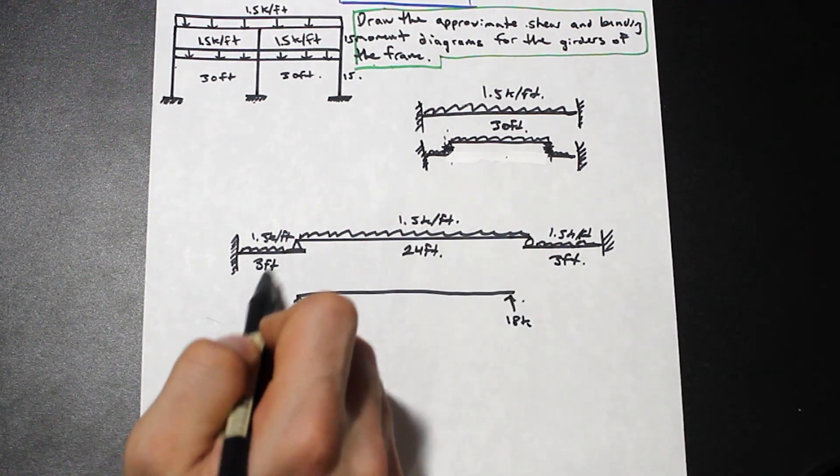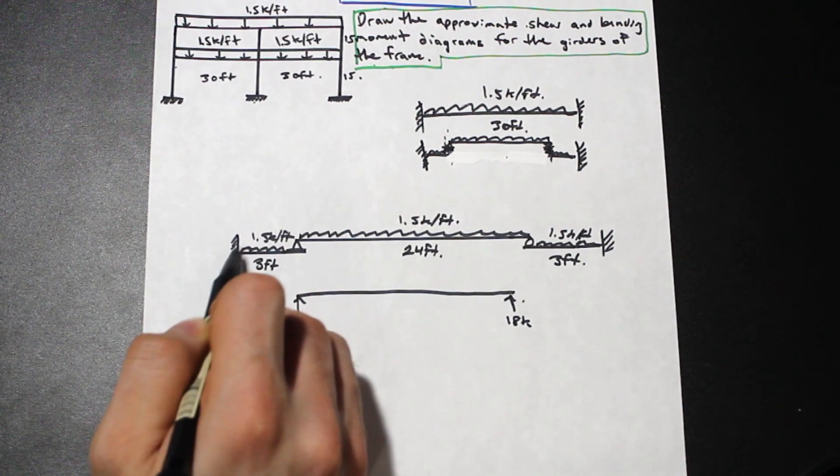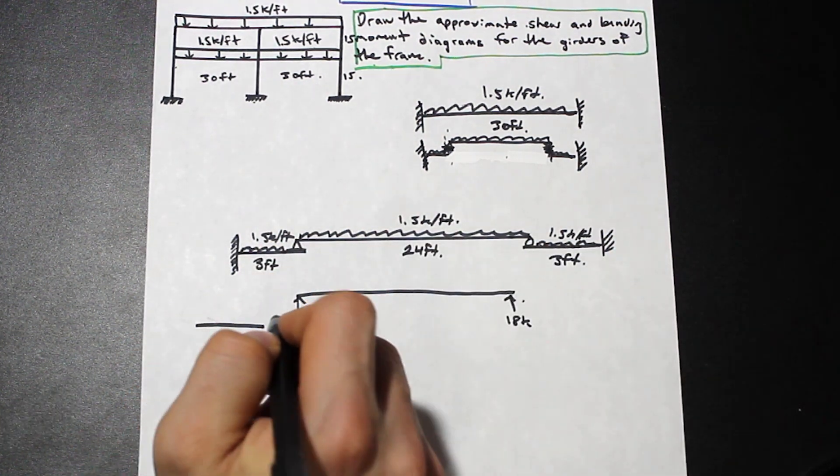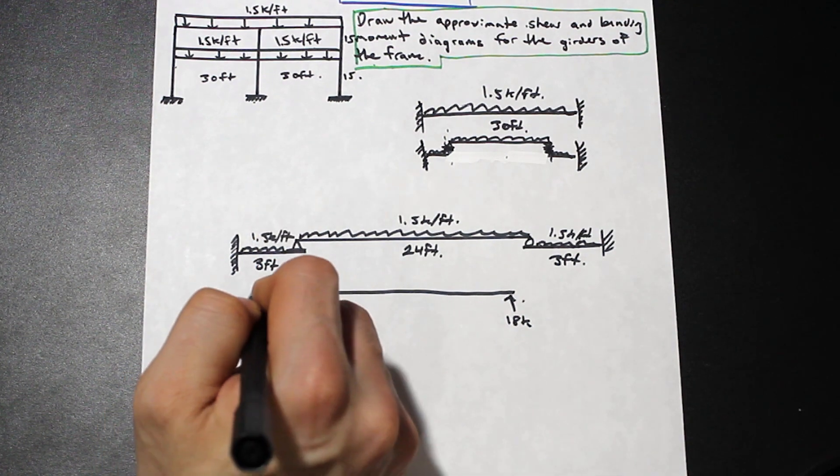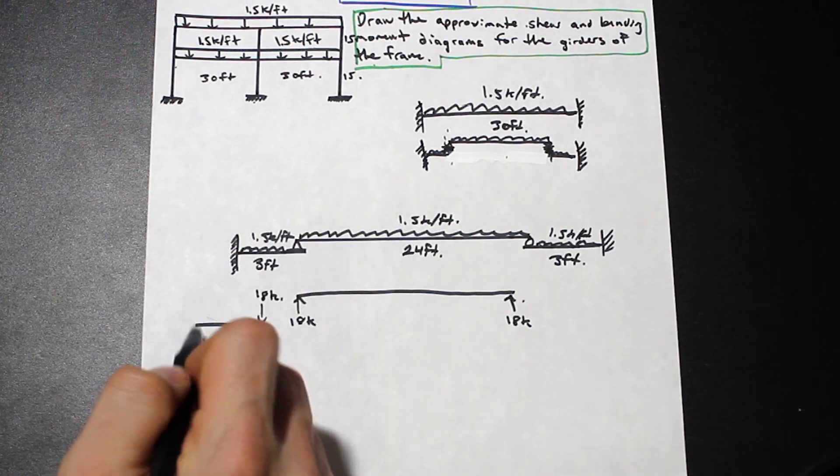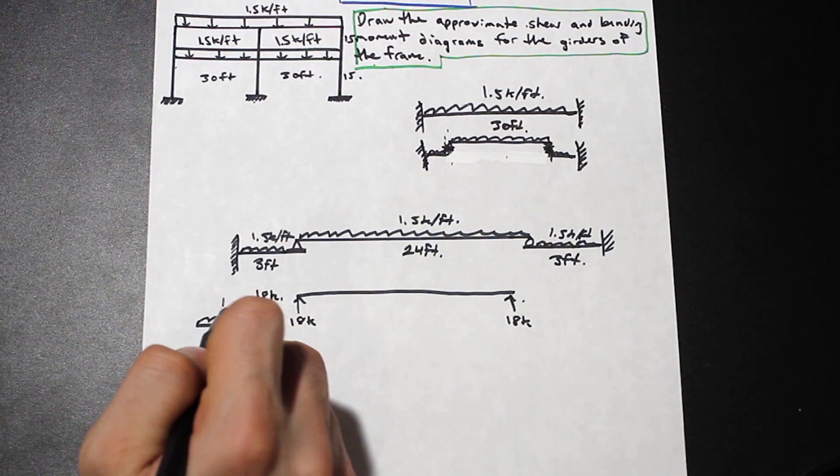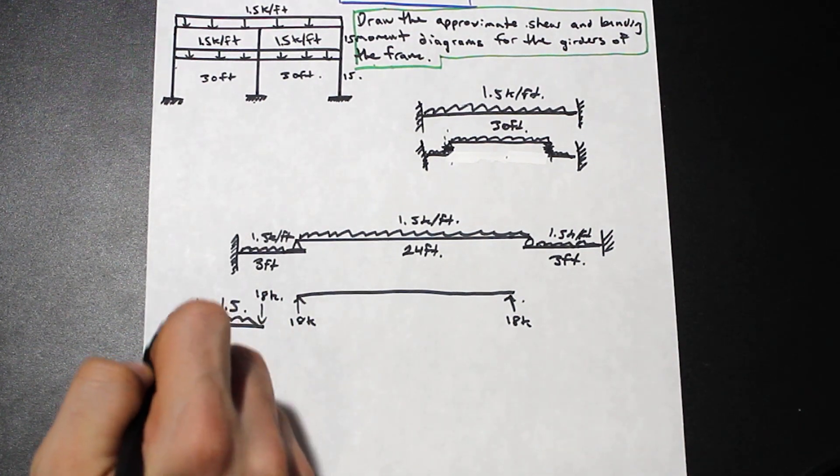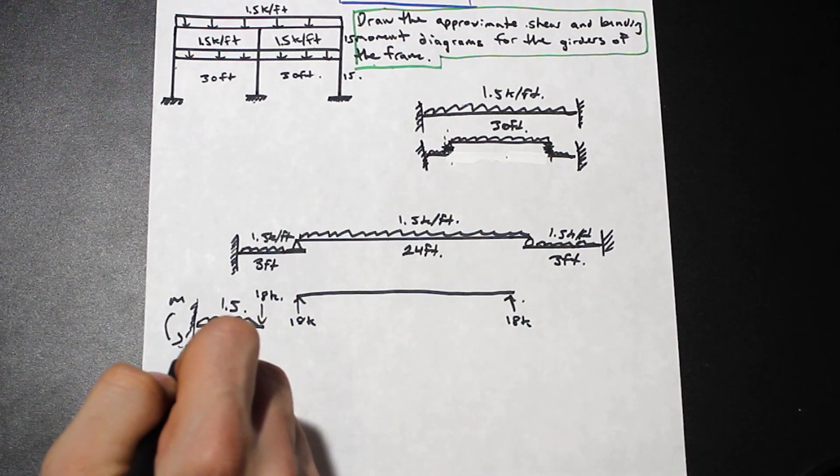And if we go ahead and we transfer this to this portion here, it's going to be equal and opposite. So this is going to be acting down, we have 18 kip from this reaction. And then we have this uniformly distributed load here, and we have a fixed support. So we're going to have a moment and a shear here.